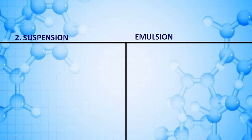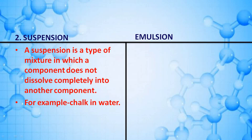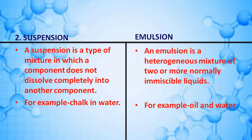Distinguish between suspension and emulsion. A suspension is a type of mixture in which a component does not dissolve completely into another component — for example, chalk in water. An emulsion is a heterogeneous mixture of two or more normally immiscible liquids — for example, oil and water.